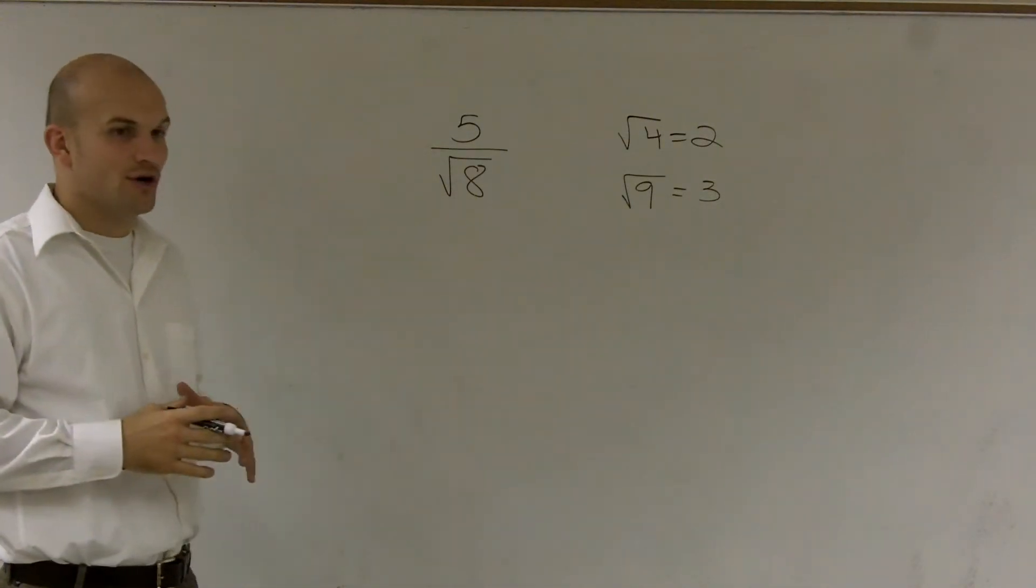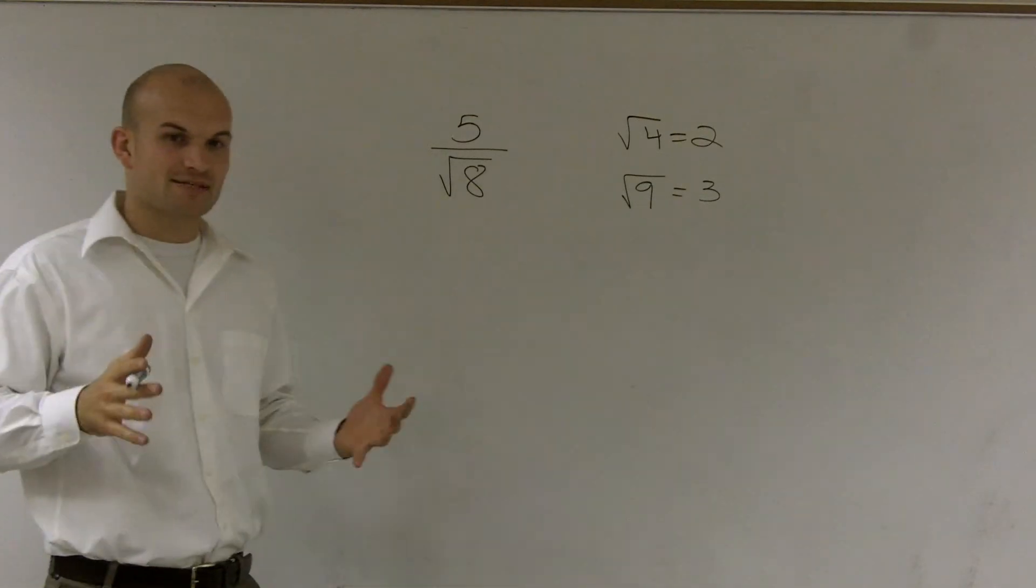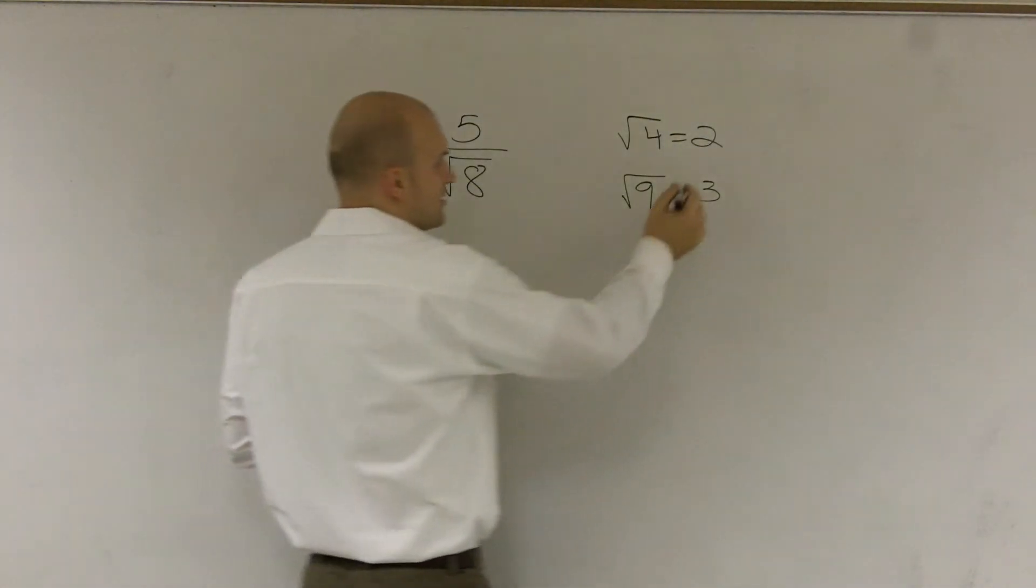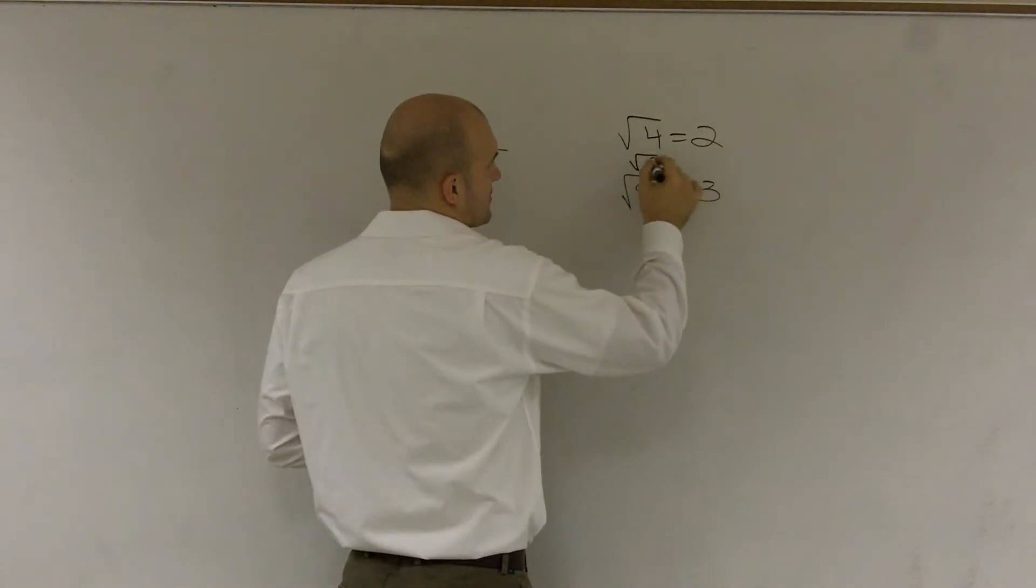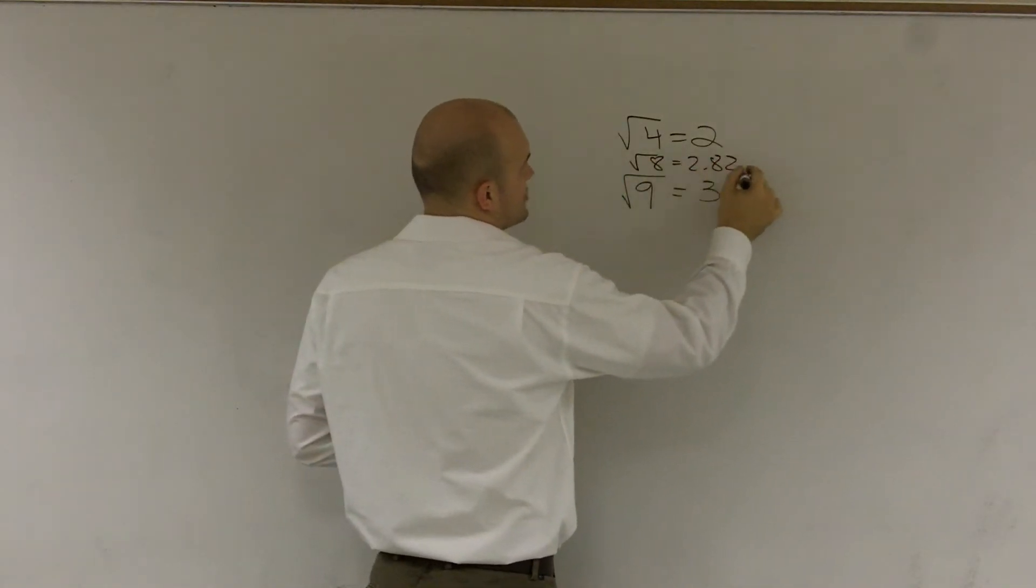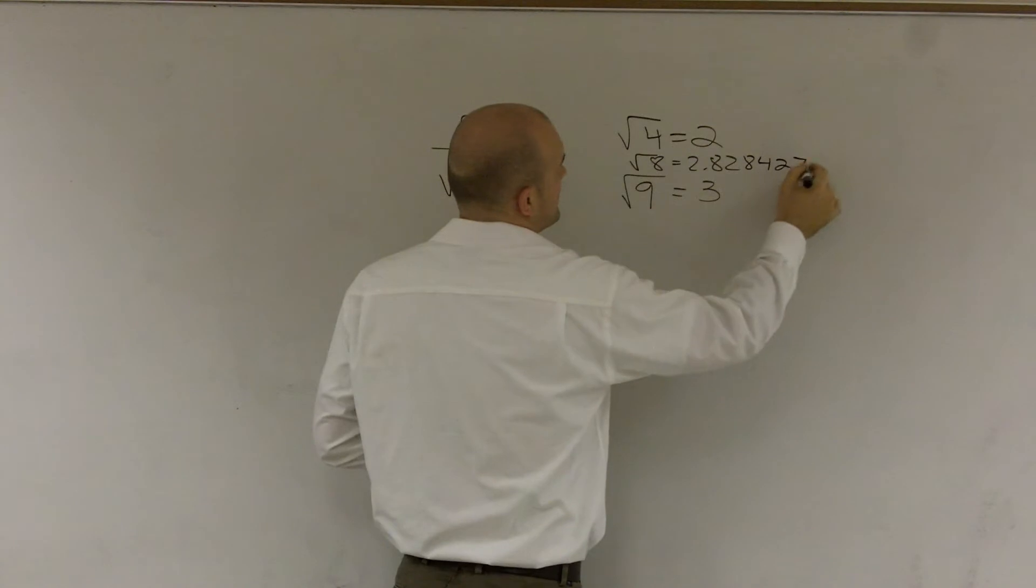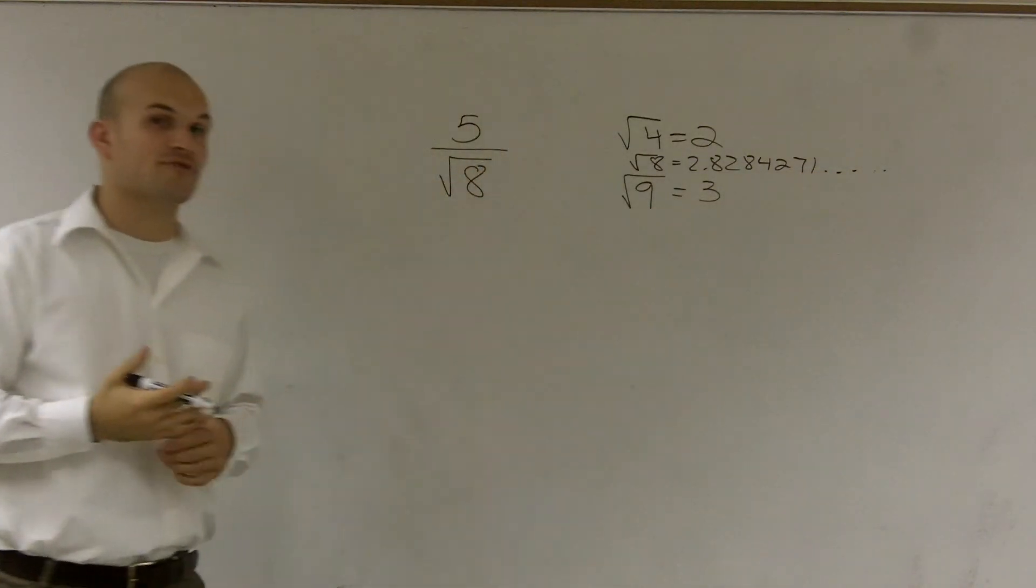And what we'll actually notice, if you type in your calculator, it's only going to approximate so many digits. But the square root of 8 is actually 2.8284271 dot dot dot, meaning it goes on forever.